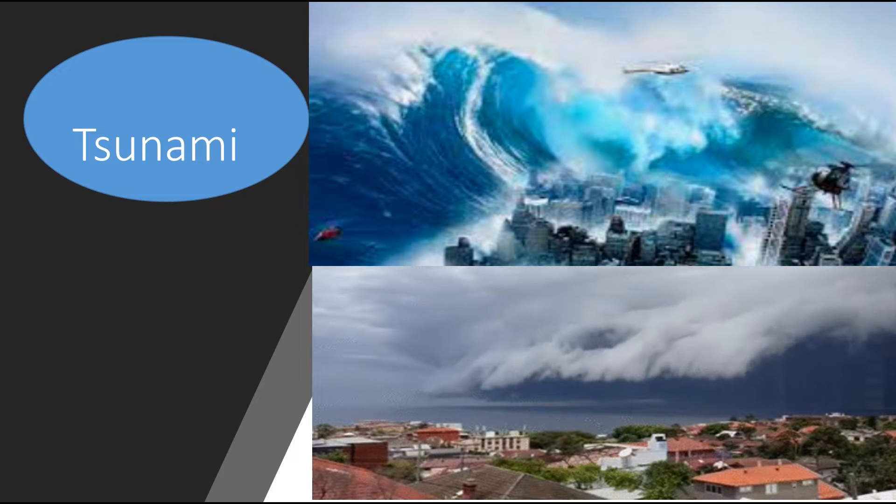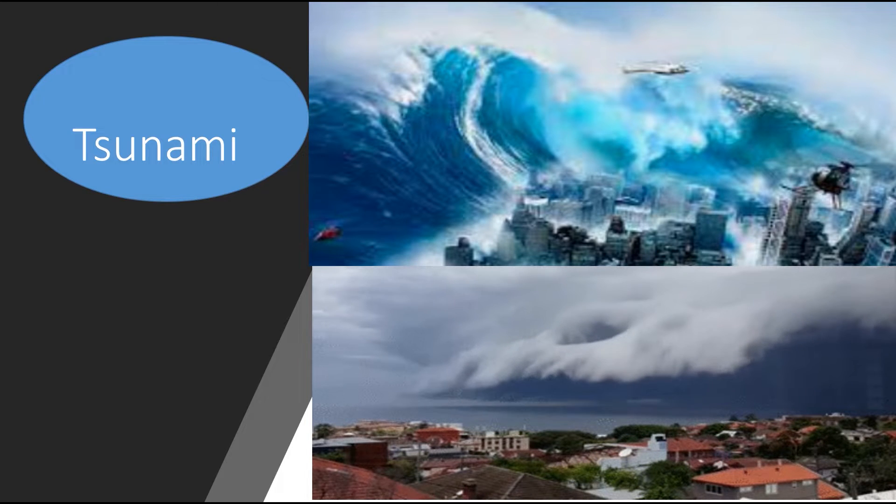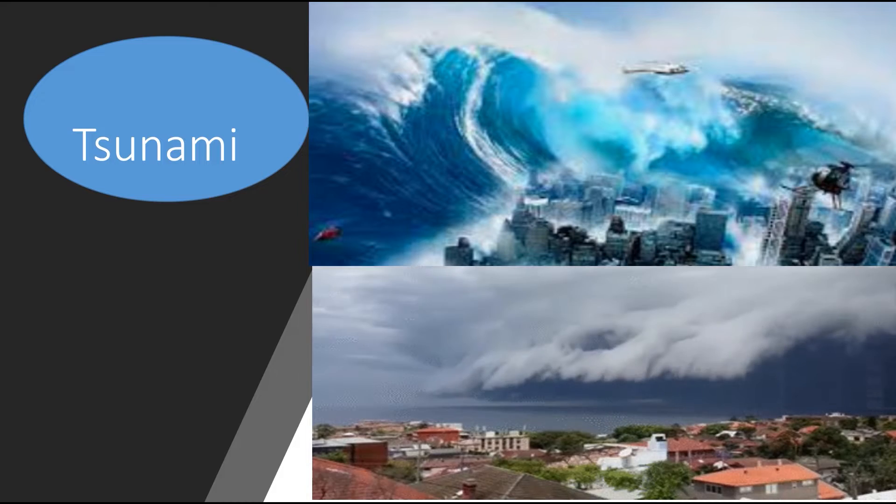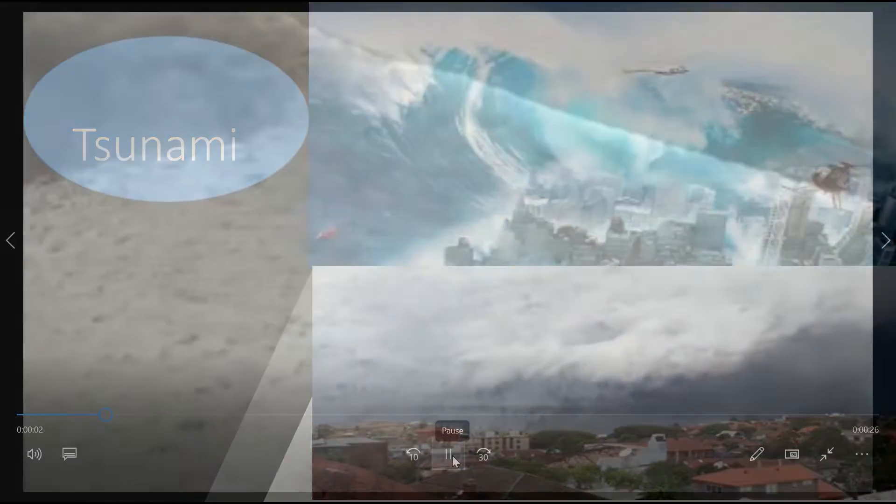A tsunami is a large wave in the ocean caused by tectonic movement under the sea. Tsunamis can be caused by volcanic eruption, underwater landslides, earthquakes, or due to the impact of a meteor or comet hitting the surface of the sea. Tsunamis can cause great destruction of property and loss of life when they reach land.